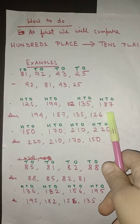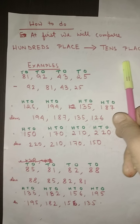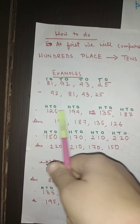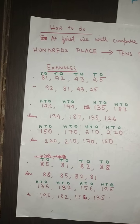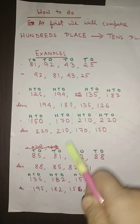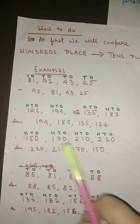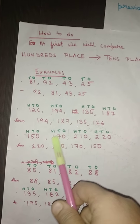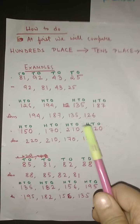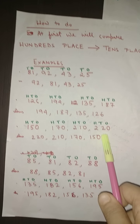Now the next set of numbers: 126, 194, 135 and 187. The numbers in the hundreds place are all same, so we have to compare the numbers of the tens place. The tens digits are 2, 9, 3 and 8. The biggest is 9, so 194 will be first, then 187, then 135, and at last will be 126.